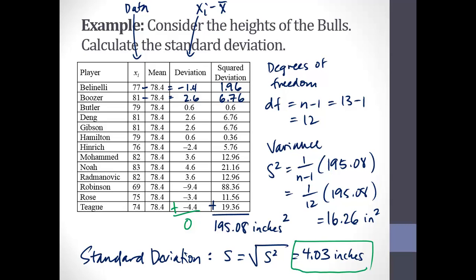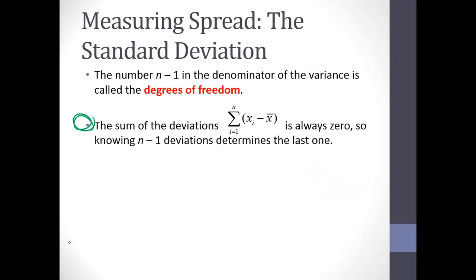Is there a good check — if you're calculating all these deviations, can you verify your work? Absolutely. The deviations will always add up to zero, so that's a way to double-check. Maybe with some rounding it might not be exactly zero, but if you're calculating the deviations for your data set you can double-check to make sure you've done it correctly.